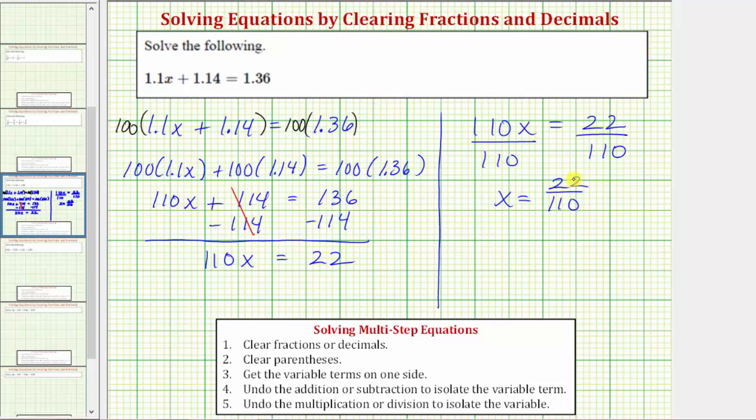The greatest common factor between 22 and 110 is 22. To simplify the fraction, we divide the numerator and denominator by 22. So as a fraction, x equals 22 divided by 22, which is one, over 110 divided by 22, which equals five. So our solution is one-fifth.